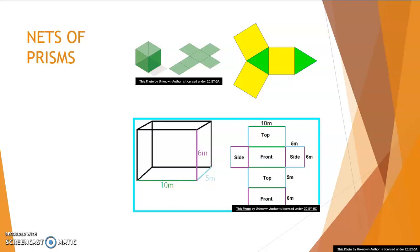When we look at the nets of prisms, here I have my cube that I opened up and we can see it has six faces, and they are all squares.